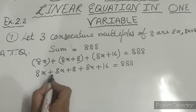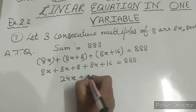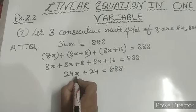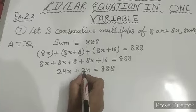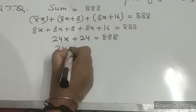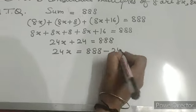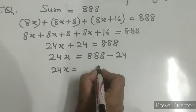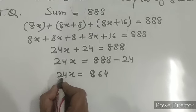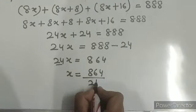When we open the brackets and collect the like terms: 8x plus 8x plus 8x is 24x, and 16 plus 8 is 24, so 24x plus 24 equals 888. Now we find the value of x. Since 24 is on the left side with a plus sign, when we transpose it to the other side its sign becomes minus: 24x equals 888 minus 24, which gives 24x equals 864.